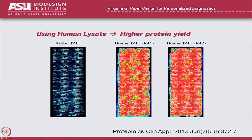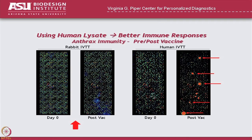The signal was just unbelievable — about 15 times stronger than we could get from the rabbit lysate. This is whole human extract that includes human ribosomes and human chaperone proteins, which means there are proteins in the lysate that help these proteins fold in their natural shape.